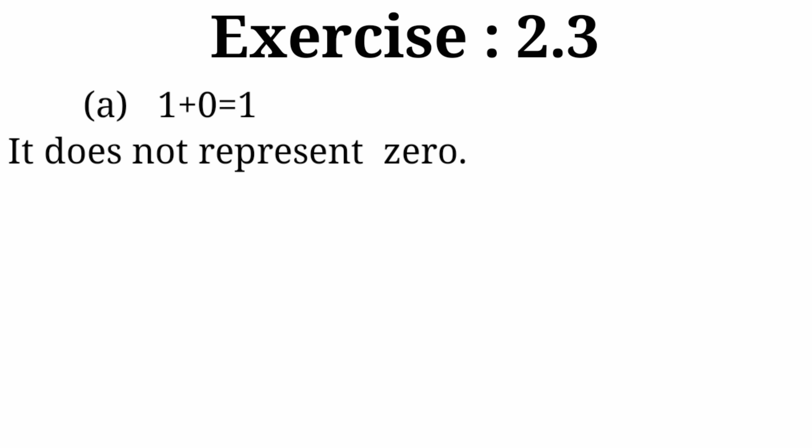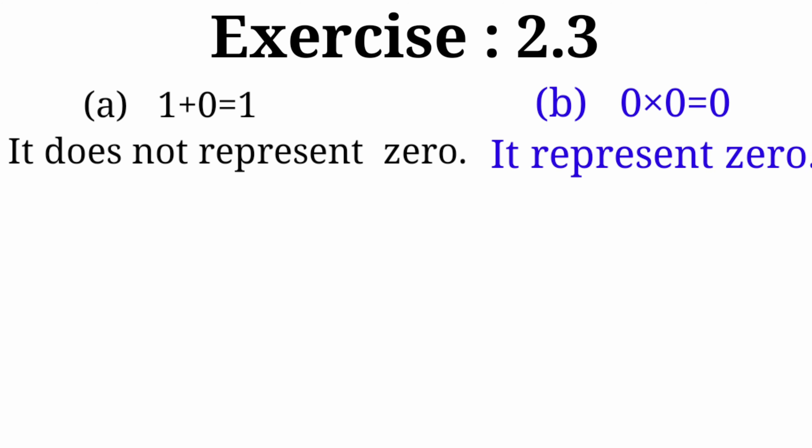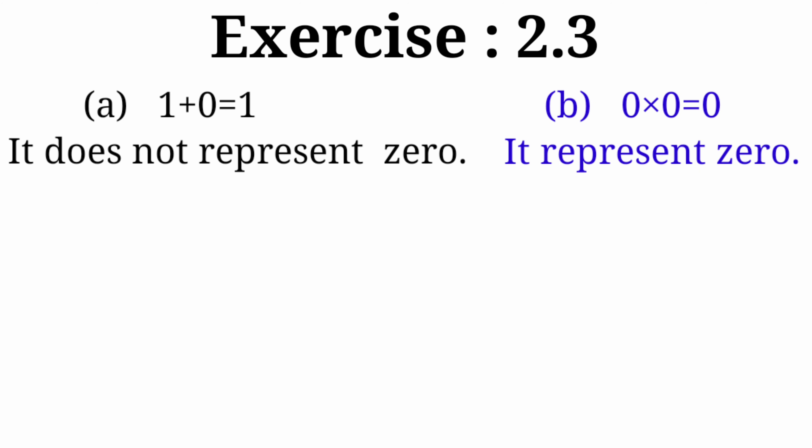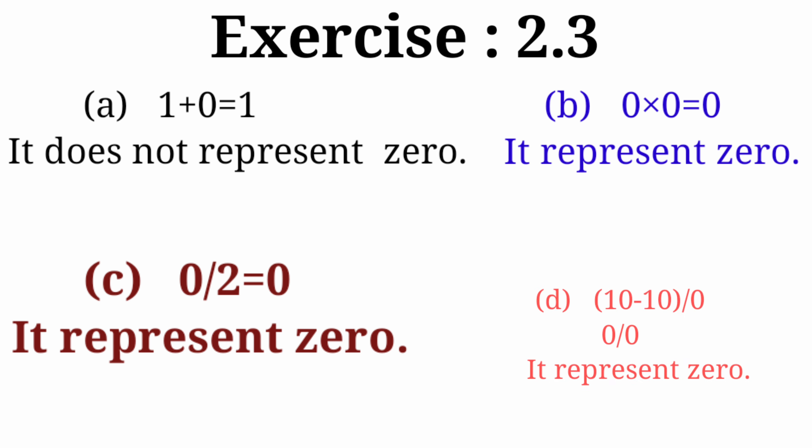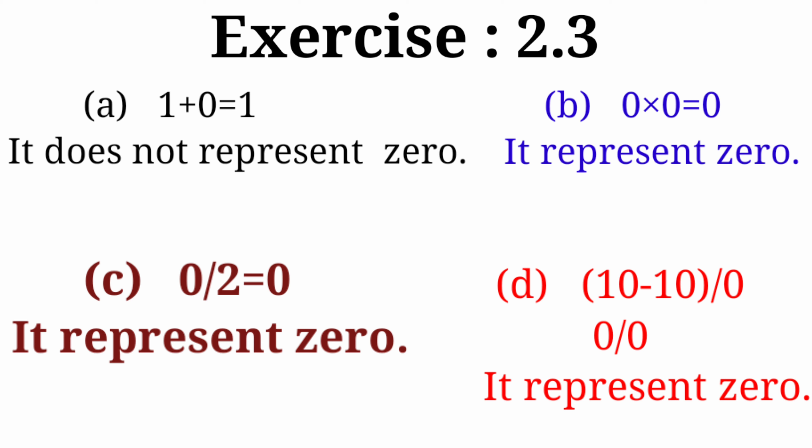So Part A, 1 plus 0 equals 1, which means this equation will not represent zero. Now Part B: 0 multiplied by 0 gives us 0, so this equation will represent zero. Part C: 0 divided by 2 gives 0, so this also represents zero. The last part, 10 minus 10 divided by 0 — when we do 10 minus 10 we get 0, and 0 divided by 0 again gives 0, so this equation also represents zero.